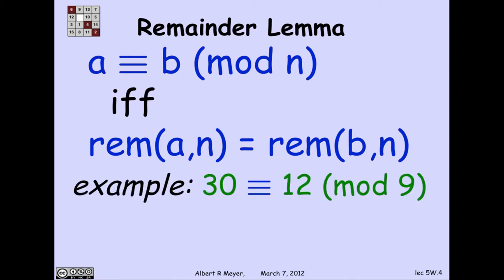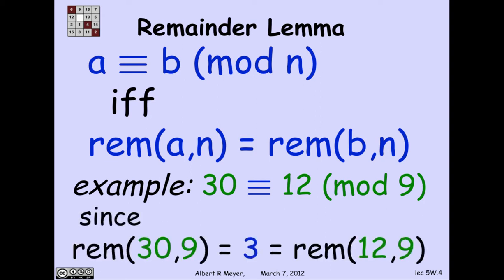So let's work with that definition. We can conclude using this equivalent formulation that 30 is equivalent to 12 mod 9 because the remainder of 30 divided by 9, well, it's 3 times 9 is 27, remainder 3. And the remainder of 12 by 9 is 3. So they do indeed have the same remainder 3.